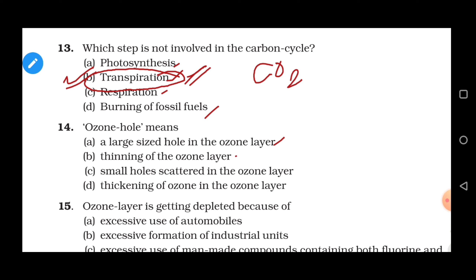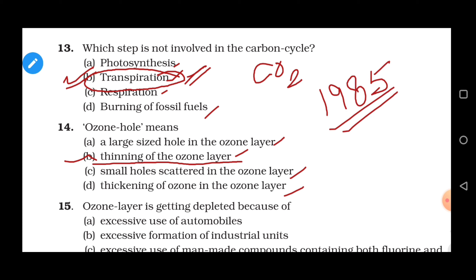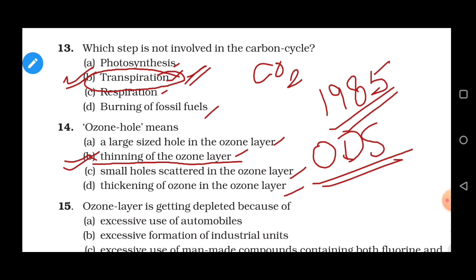Question 14: Ozone hole means — options are a large size hole in the ozone layer, thinning of the ozone layer, small holes scattered in the ozone layer, or thickening of the ozone layer. Correct answer is option B: thinning of the ozone layer. The ozone hole was observed in Antarctica in 1985. It is caused by ozone-depleting substances such as chlorofluorocarbons (CFCs) reacting with ozone, destroying it and making the ozone layer thinner. These substances are known as ODS — ozone depleting substances.